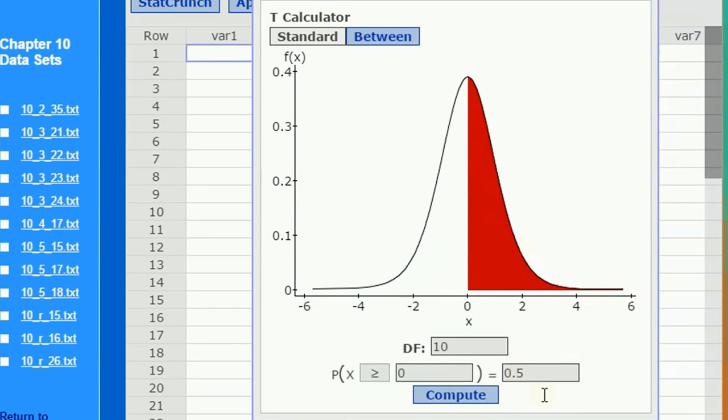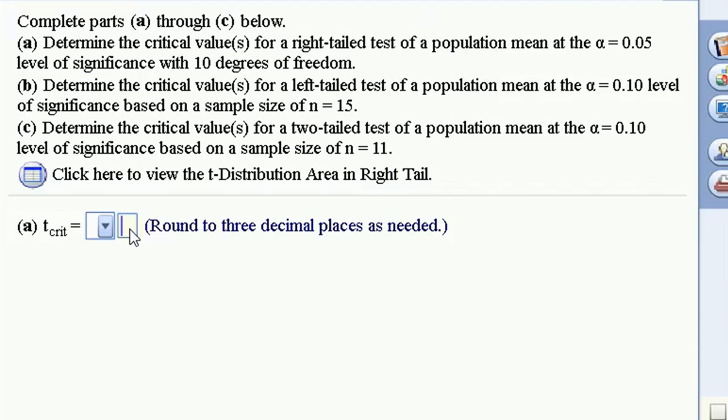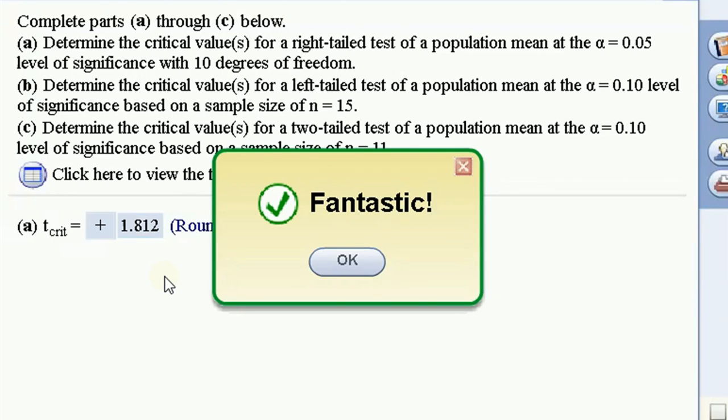Okay, so just correct that here and hit enter, and I get my cutoff. This is great. Three decimal places, I'm going to take 1.812 and bring it in here. My t-critical value is equal to positive 1.812 for the right-tailed test.